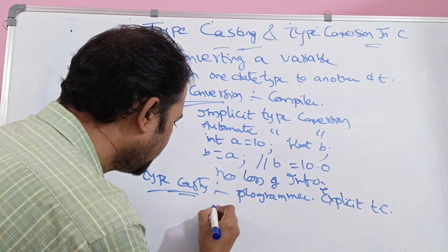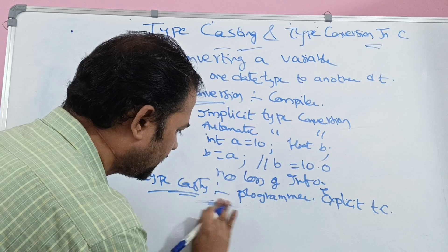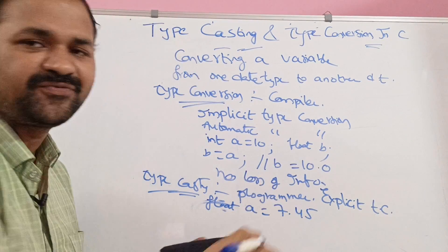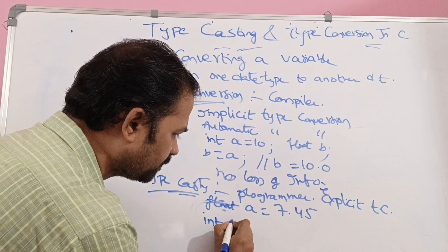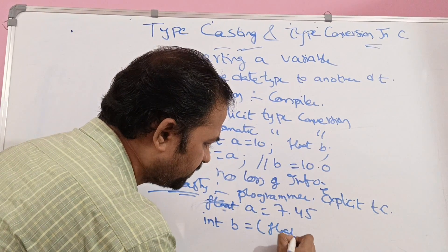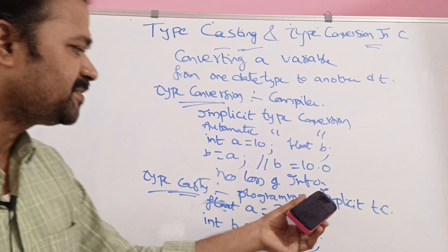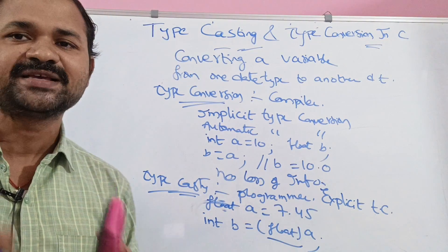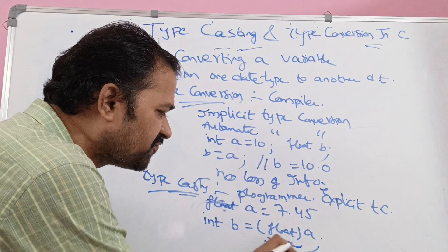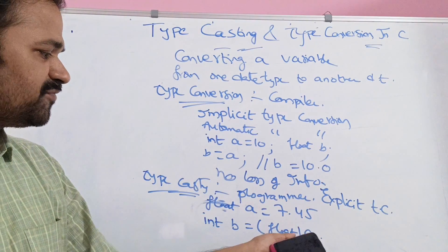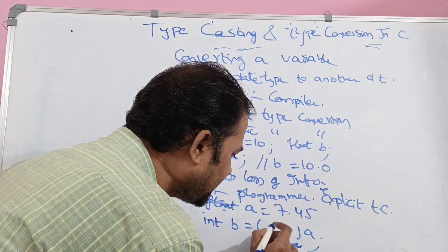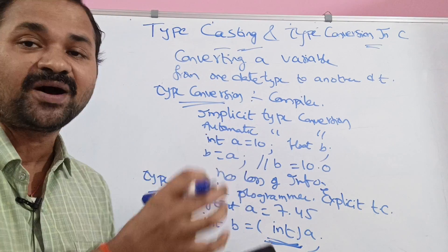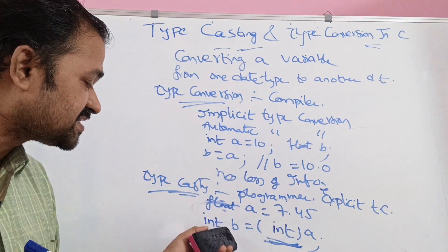For example, let's say we have float a = 7.45, and int b = (int)a. The syntax for type casting is to write the data type in parentheses followed by the expression. Here the data type is integer. The value of a is 7.45, and the integer part of 7.45 is 7, so 7 will be assigned to b.